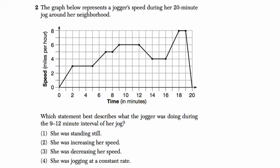Let's start by reading the problem. It says that the graph below is a jogger's speed, so someone's running along, during her 20-minute jog around her neighborhood. So you can see on the time axis it does stop at 20 minutes, and here on the y-axis we have the speed. And we're saying it best describes what the jogger is doing during the 9-12-minute interval. So let's find that.